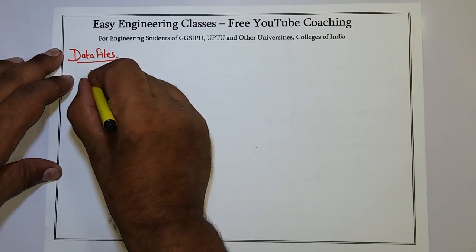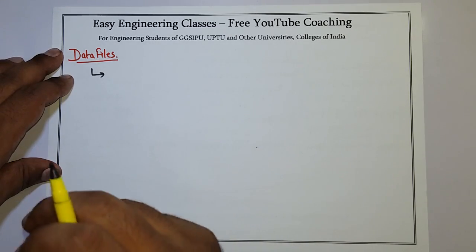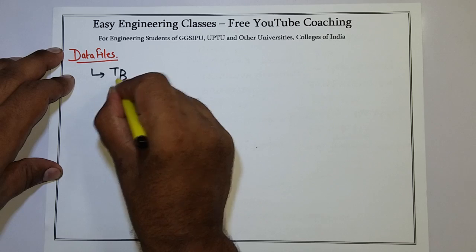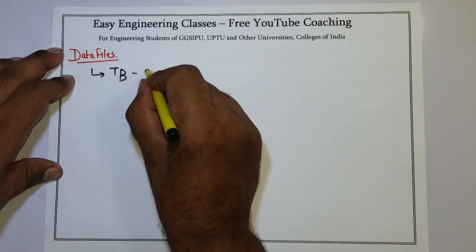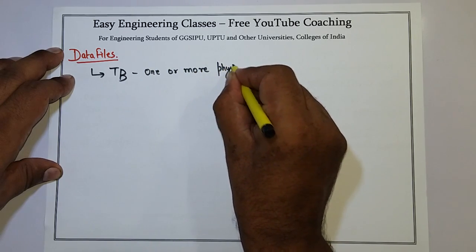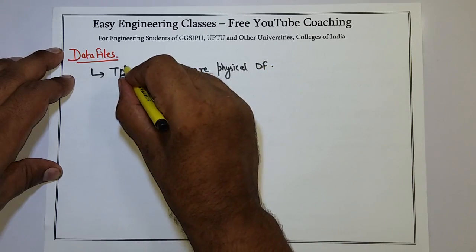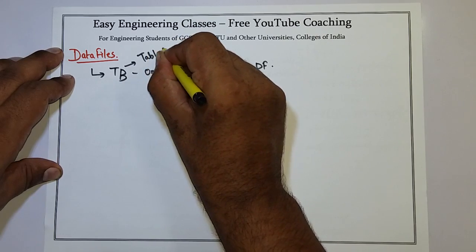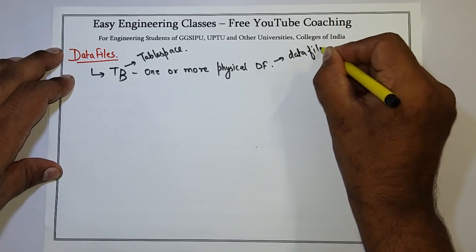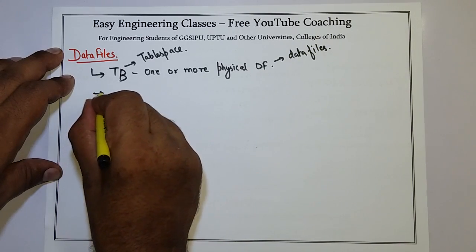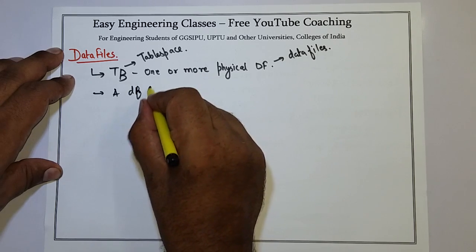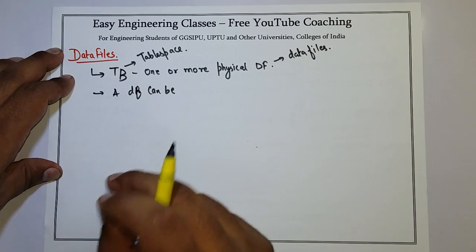When we have seen table space, a table space in Oracle consists of one or more physical data files. I am using TB as the abbreviation for table space and DF for data files. A data file can be associated only with one table space and one database.